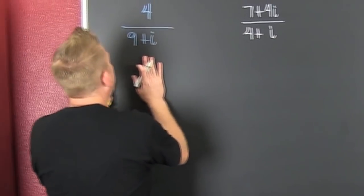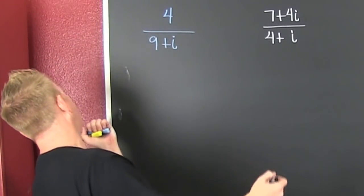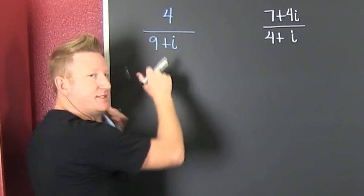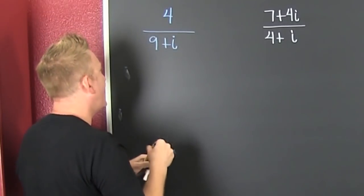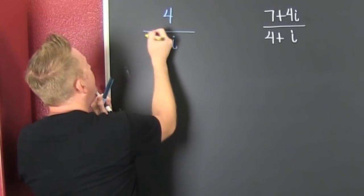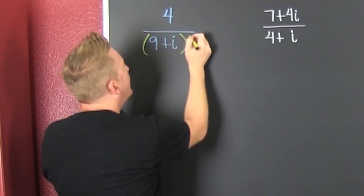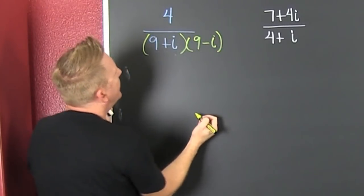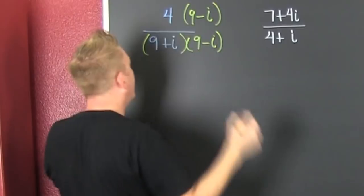So I'm going to take that up here. Because whenever I have a complex number in the denominator and I want to realize that denominator, then I multiply top and bottom by the conjugate. The conjugate is the same numbers with the opposite sign. So that's why I'm multiplying by 9 minus i and 9 minus i.